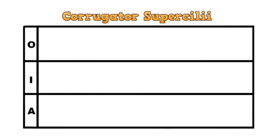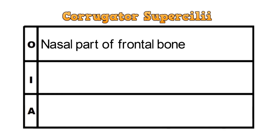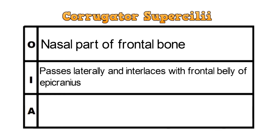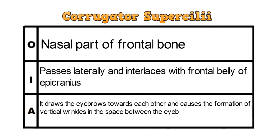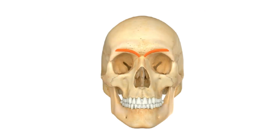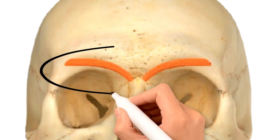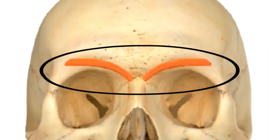The next muscle is the corrugator supercilii. This muscle originates from the nasal part of the frontal bone. For insertion, it passes laterally and interlaces with the frontal belly of the epicranius. Its action is to draw the eyebrows towards each other and cause the formation of vertical wrinkles in the space between the eyebrows. This is the corrugator supercilii — vertical wrinkles appear when we frown.